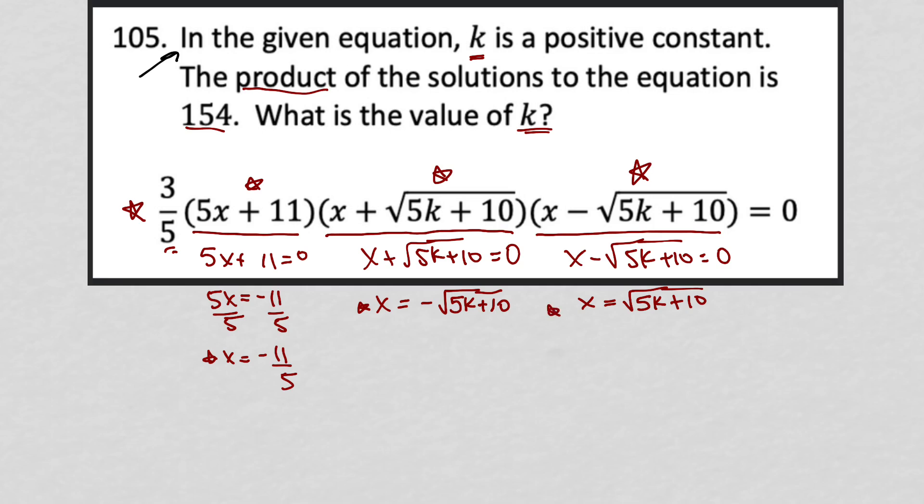So here are my three solutions to the equation. I want, however, the product of those solutions to equal 154. So what that means is that I should have negative 11 fifths times the negative of root 5k plus 10 times the positive of root 5k plus 10 equal to 154.